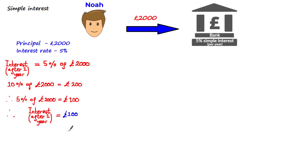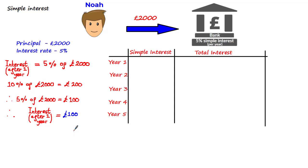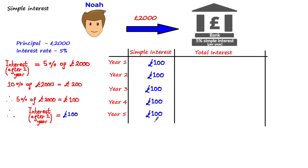Now, assuming we wanted to calculate the total interest that Noah makes after 5 years, we could do this by first drawing a table where we have each year going up to year 5 in the first column. From working out the simple interest after each year, we can then work out the total interest after 5 years. We had just calculated that the interest after year 1 was £100, and because this is simple interest, the interest after each year would be the same fixed amount of £100.